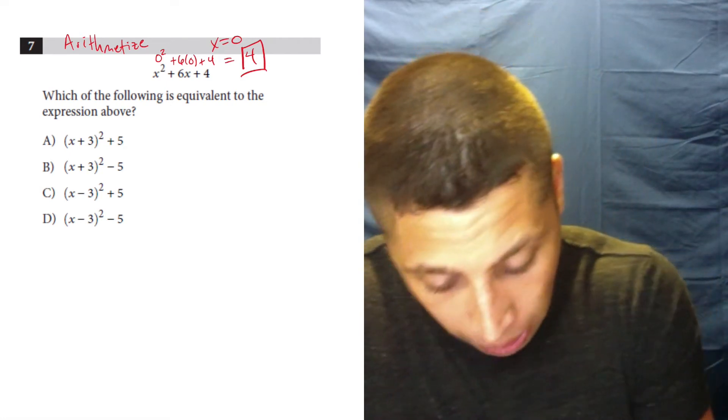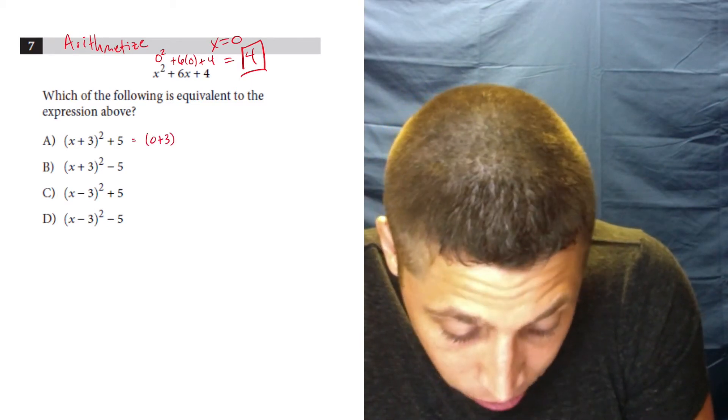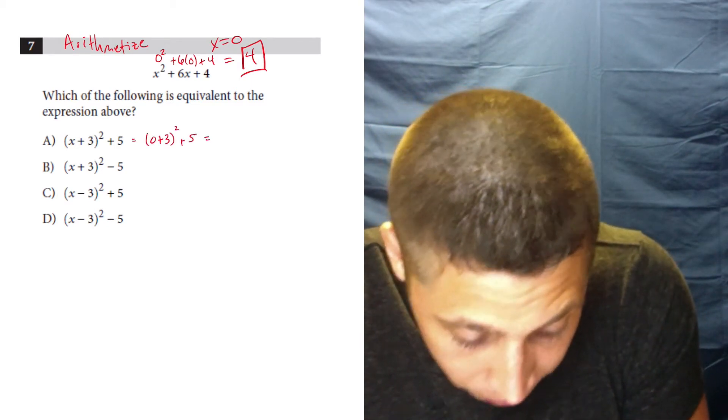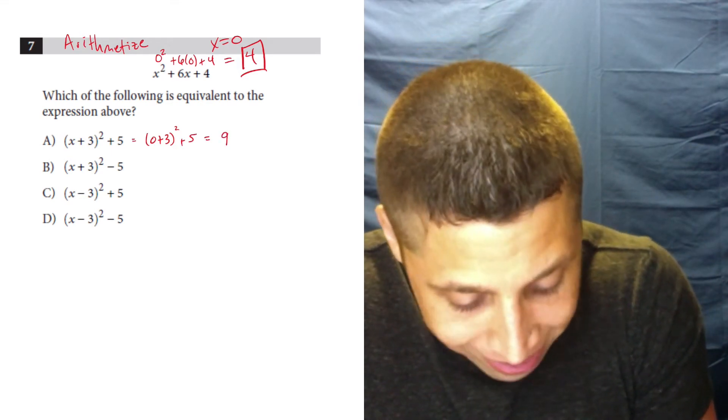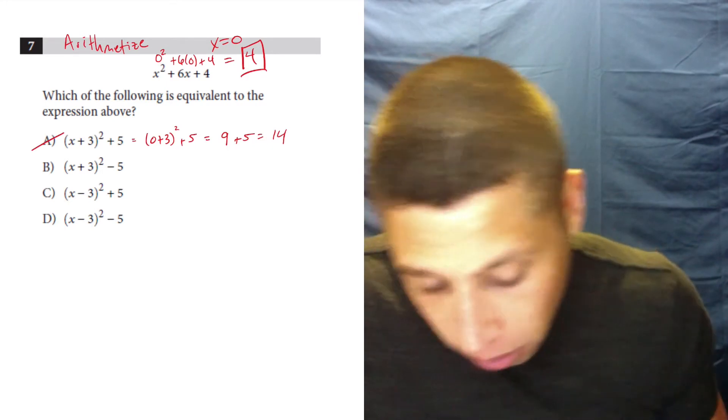This is like my magic number. I need a choice that's equivalent to this expression, meaning that the number, the result, when I plug in zero, is also going to be equivalent. It's going to be four. So let's try A. What happens? So that would be zero plus three squared plus five. So that's three plus zero is three, three squared is nine plus five. That is 14. That's not four. So that's gone.